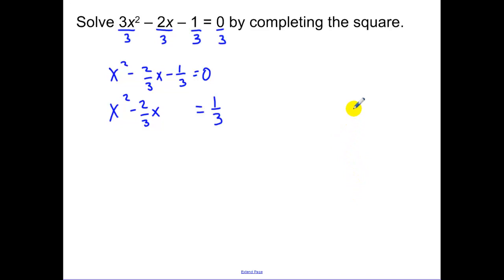Now, this is the challenging part. You need to do b, which is 2 thirds, divided by 2 squared. Remember dividing by 2 is like multiplying by 1 half. So really, we have 1 ninth that we're going to be adding in to both sides.